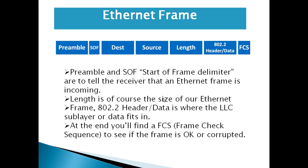The frame also includes a length field indicating how long the ethernet frame is, and an 802 header. The data field is where the Logical Link Control lives inside the ethernet frame — this is where the LLC checks for error detection. The FCS (Frame Check Sequence) field checks whether any frames or data have been corrupted. This is what the ethernet frame looks like.